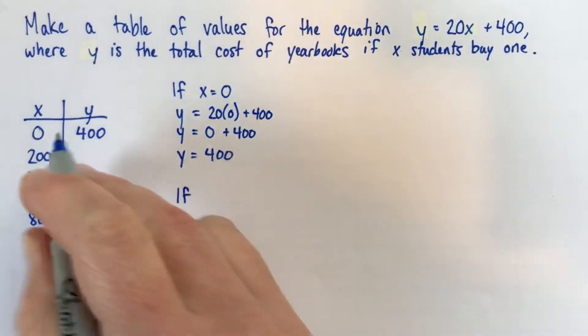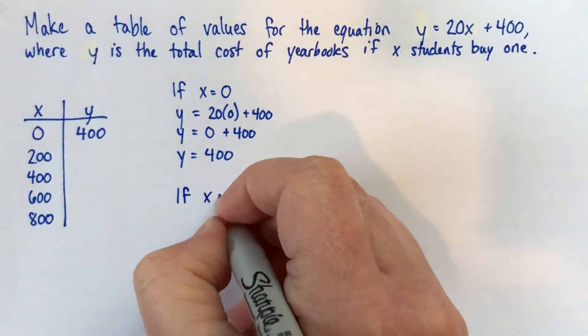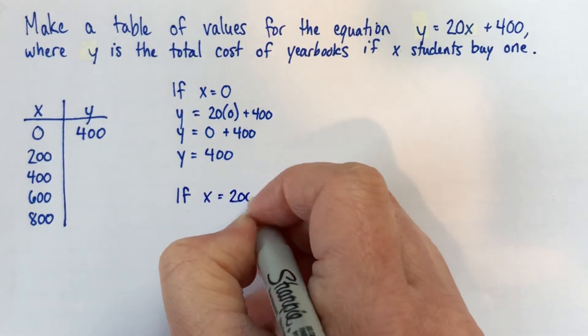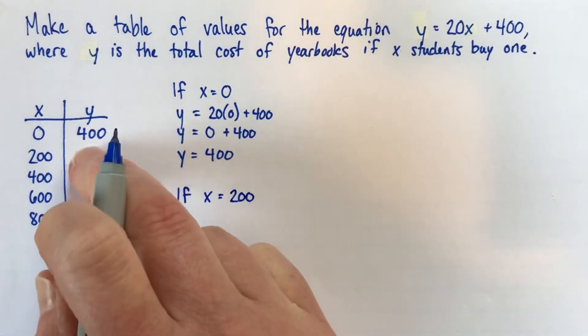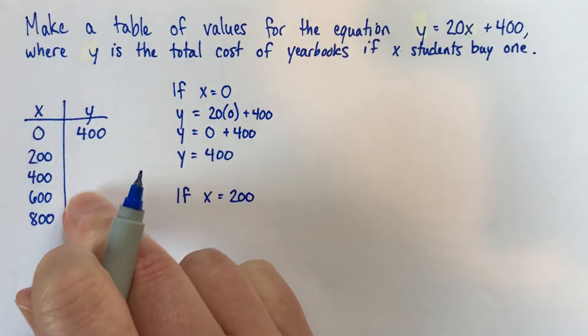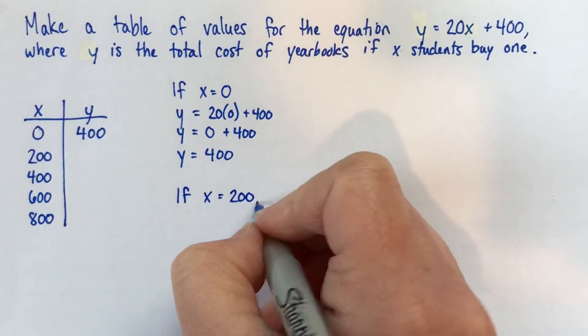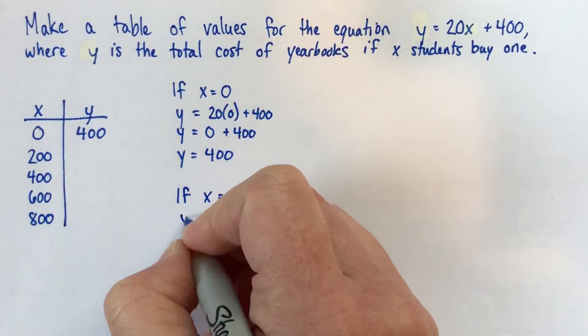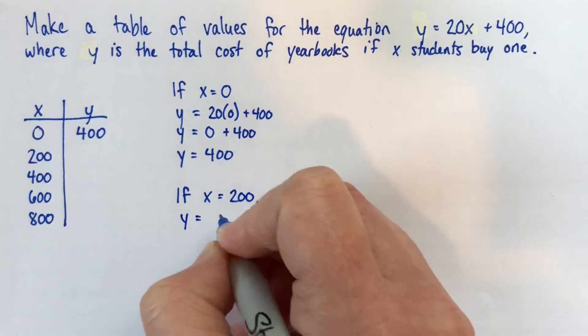So we sort of knew that because this $400 is maybe like the setup fee. Alright, next, if x equals 200, what I'll do, maybe one or two more, and then I'll just tell you the values for the last couple. I think it's important to see some examples, but you probably don't need to see me do this five times.